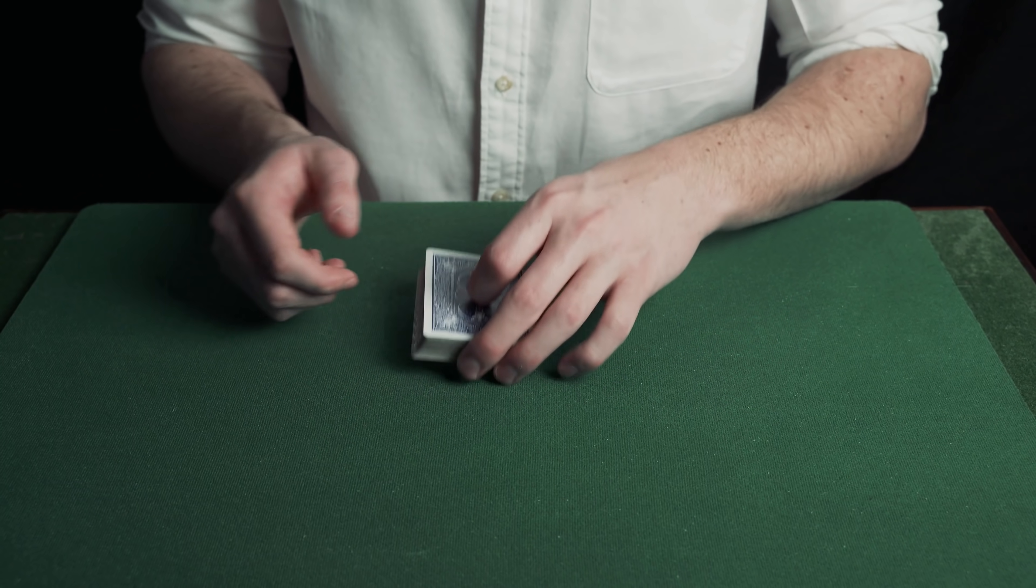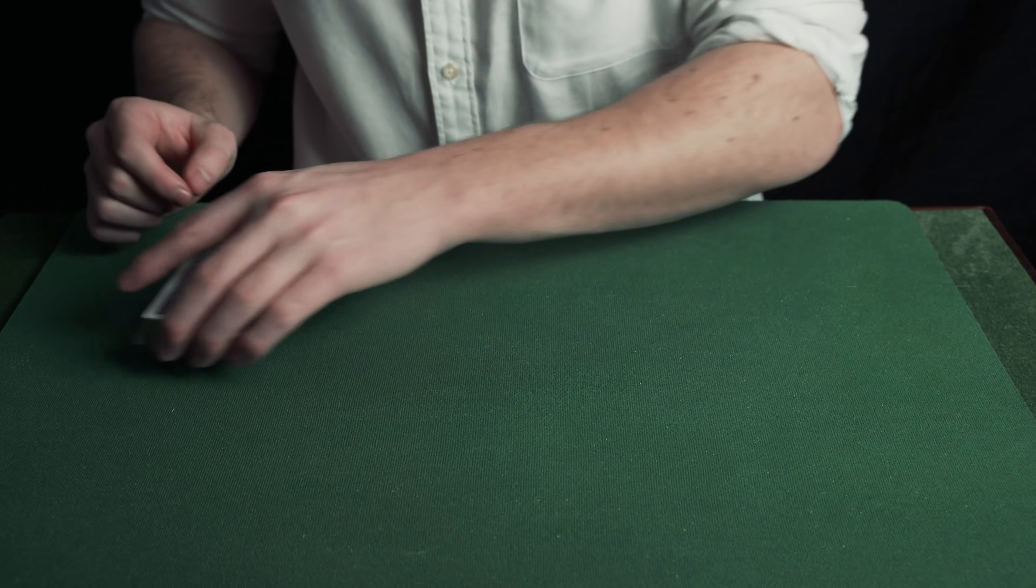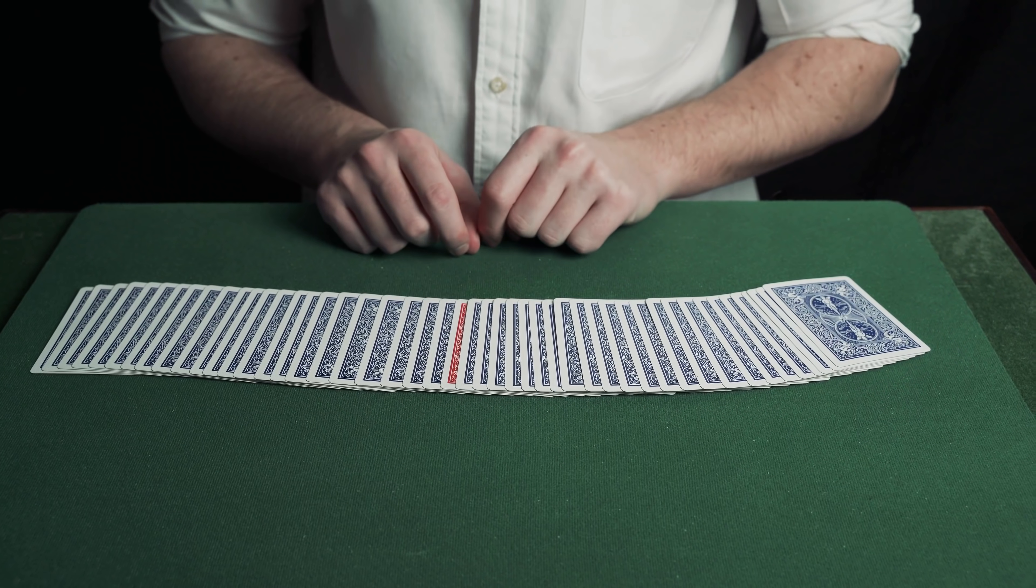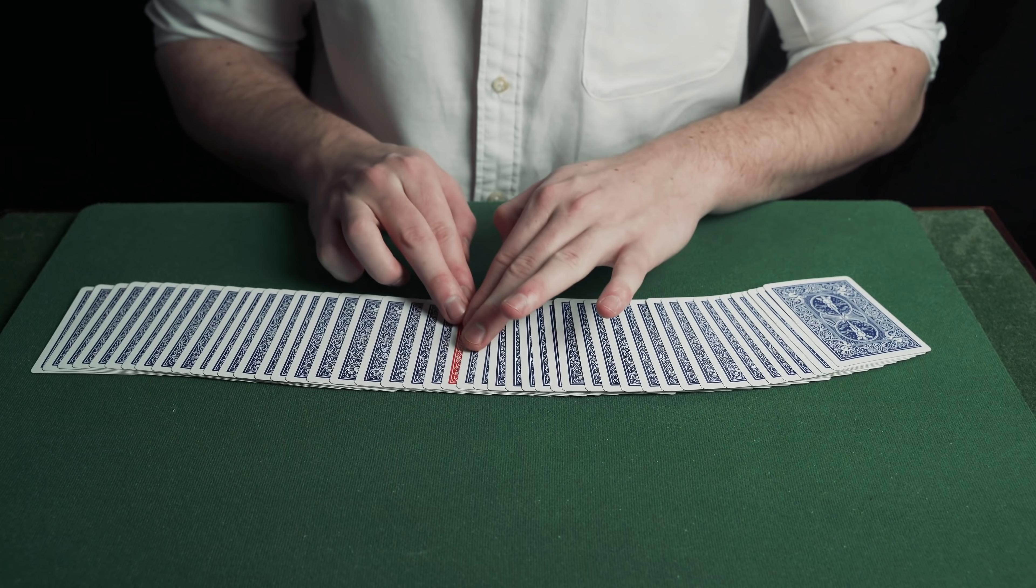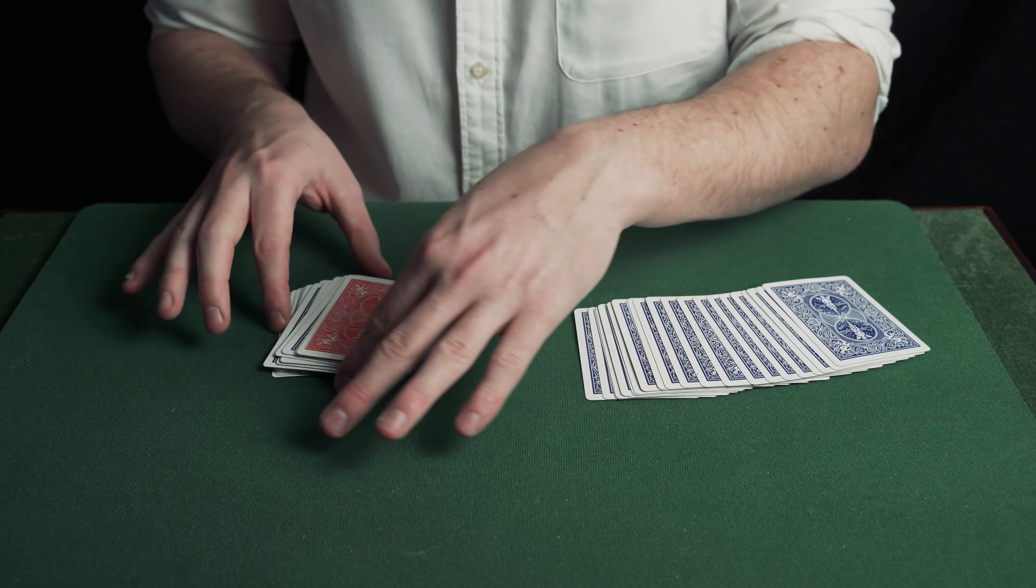Point to the red card and then split the deck into two piles. It is important that the pile with the red card goes on top of the other pile as shown.